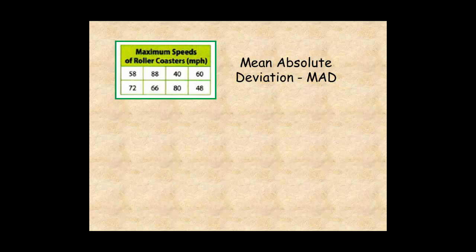To find the MAD of a dataset, the first step is to calculate the mean, which for this dataset is 64.